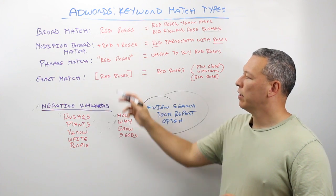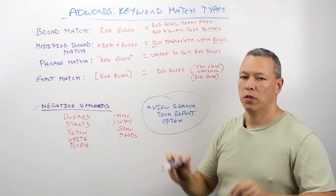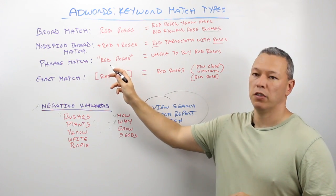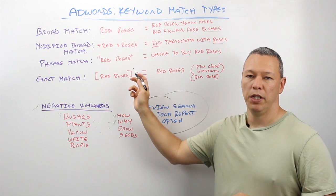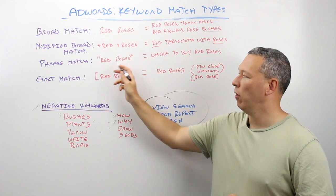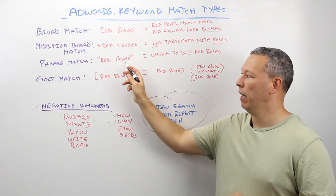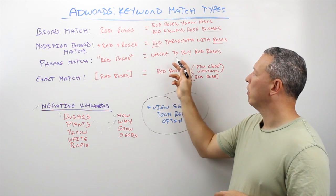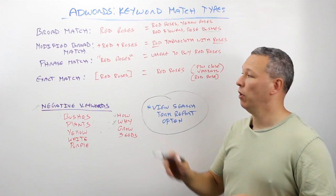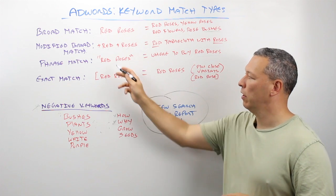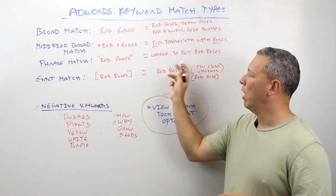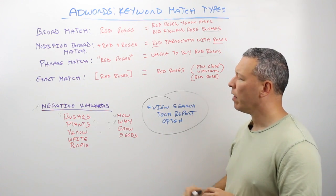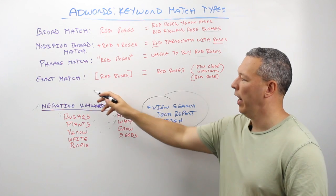The next one is phrase match, and for this one you put the keyword inside quotes. So 'red roses' in quotes means both words need to be in the search term someone uses to trigger your ad, and they also have to be in that order — red and then roses. It might trigger for something like 'where to buy red roses,' so the phrase is included in the term but Google has some license on the words before and after it.